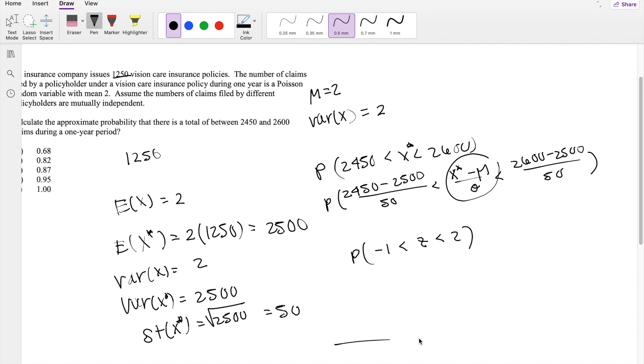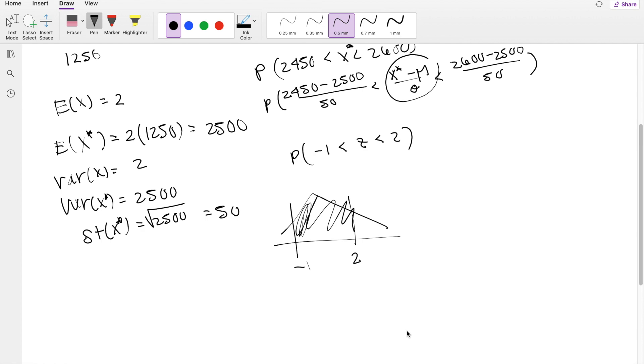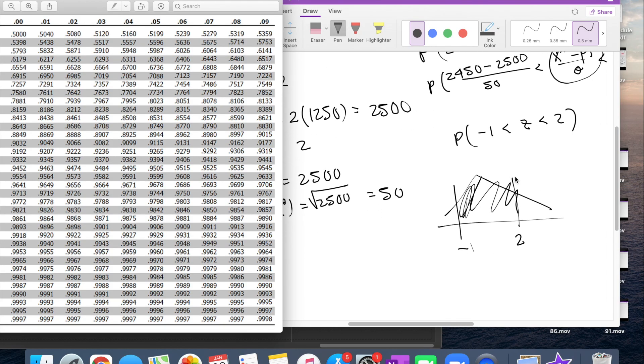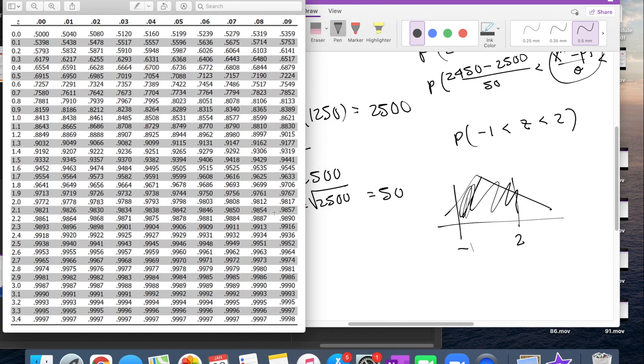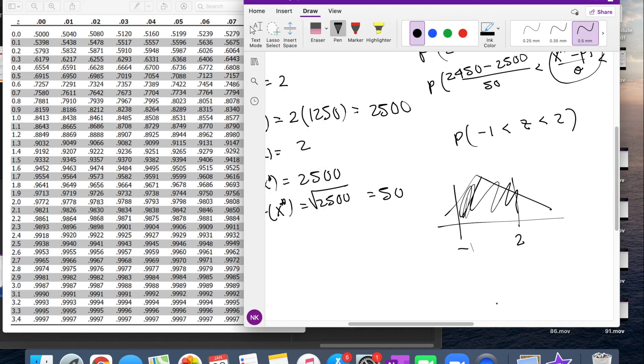Okay, so then we're basically looking for from negative 1 to 2. And remember, on the exam, they're going to give you the positive PDF, positive CDF. So we first look at what z-table value corresponds to 2.0, and that's 0.9772. So that's saying that this part right here is equal to 0.9772.